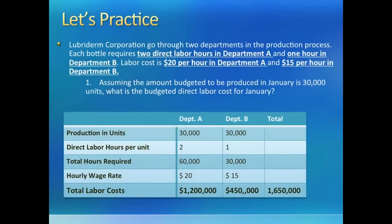We get the total number of hours needed in each department and multiply it by the rate to get total direct labor cost for the month. It is easy to see what will happen in part two: since Department A has 60,000 hours, it will have to pay overtime and total direct labor cost for the month will go up.